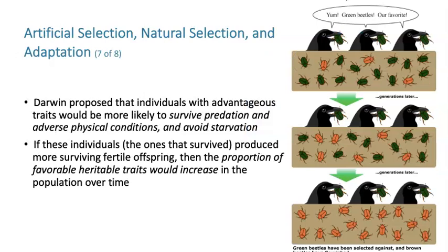Darwin reasoned that individuals with advantageous traits would be more likely to survive in adverse conditions and avoid starvation. If those individuals produced more surviving and fertile offspring, then the proportion of favorable traits — as long as they're heritable — would increase in the population over time. For example, in a population of beetles with brown and green ones, if birds can see the green ones, the brown ones have the favorable trait and increase over time.